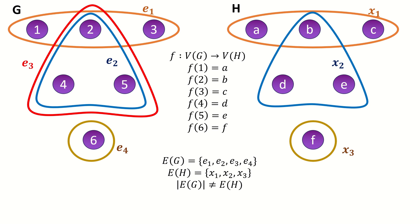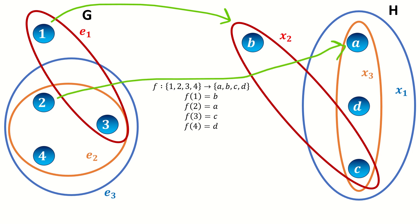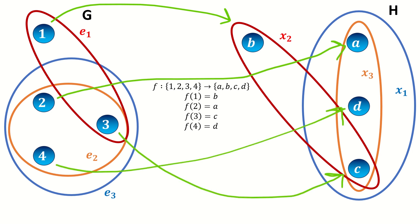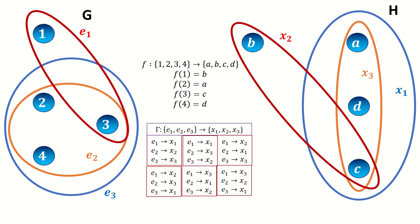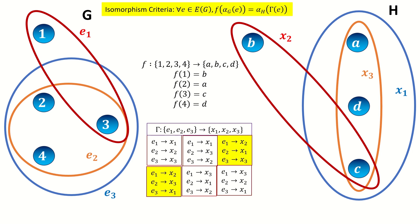Let's look at another example. To show these hypergraphs are isomorphic, we need to construct a bijection between vertices and a bijection between edges, such that Gamma satisfies the criteria in our definition of isomorphism. In this case, the following mapping should work: it takes vertex 1 to B, 2 to A, 3 to C, and 4 to D. Next, there are six ways we could define a bijection between the edge sets, but only two of them satisfy the criteria in our definition of isomorphism.